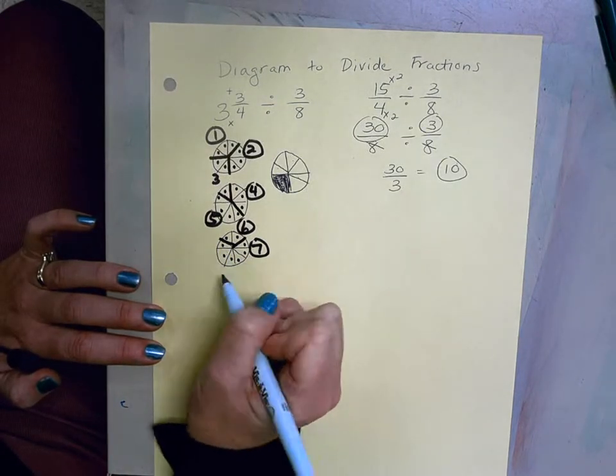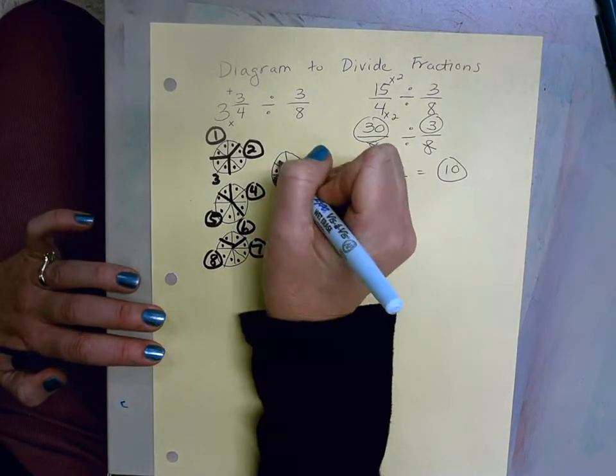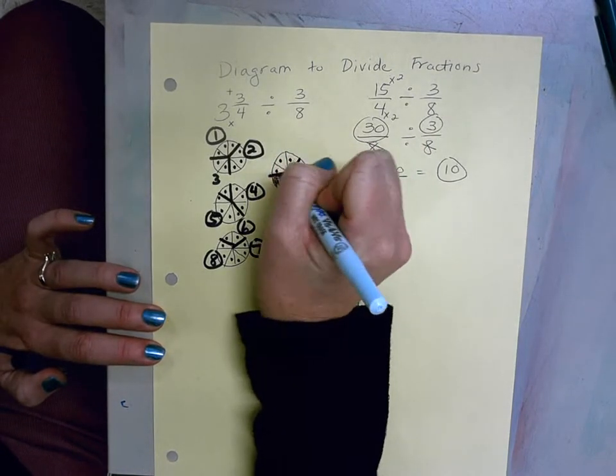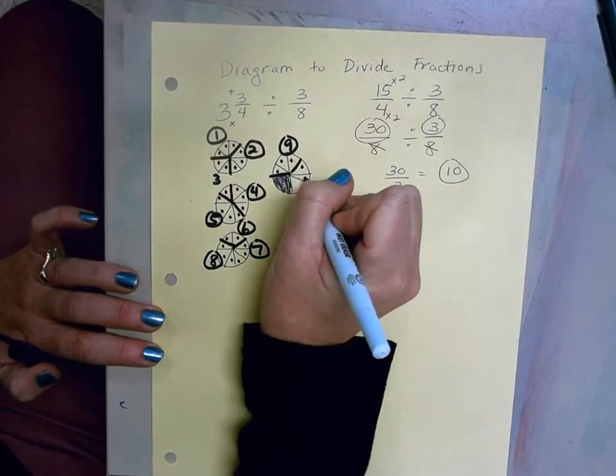1, 2, 3. That's my eighth group of 3/8. 1, 2, 3. That's my ninth group of 3/8. And 1, 2, 3.